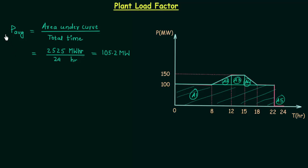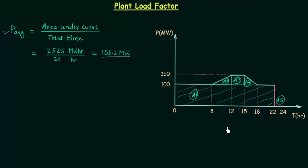In the previous lecture we saw what is average power and we also calculated the average power for this load curve — it came 105.2 MW. Now in this presentation we will see what is plant load factor and we will also calculate it for the given load curve.